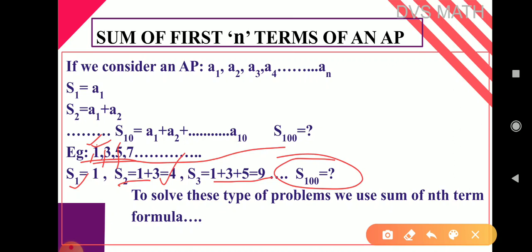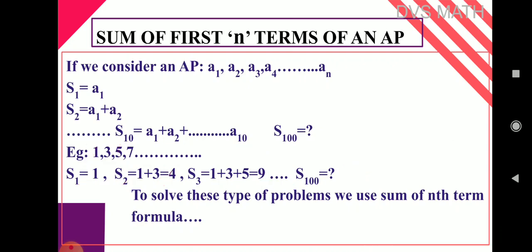If they give a sequence of numbers or an AP, and if it is a smaller number like sum of 1, 2, 3, or up to 10 terms it is manageable. But if it is like 100, 1000, 500 terms — it is too lengthy. In that case we use the sum of nth term formula.